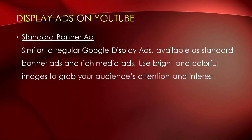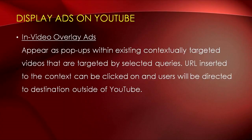Below are the types of display ads that YouTube offers. Standard banner ads are similar to Google display ads and are available as a standard banner or rich media ad — use bright and colorful images to grab your audience's attention. In-video overlay ads are ads that appear as pop-ups within existing contextually targeted videos, targeted by selected queries. A URL inserted into the context can be clicked on and users will be directed to destinations outside of YouTube.